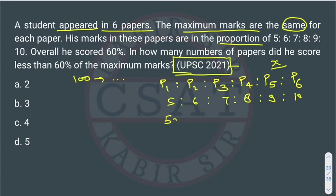It will become 5x, 6x, 7x because the marks will be in the multiple of x because they are in proportion. So the marks will become: in P1 paper, the marks will be 5x; P2, 6x; P3, 7x.